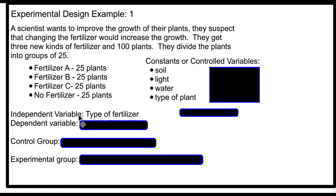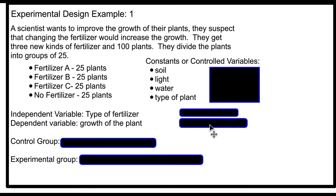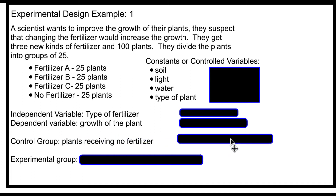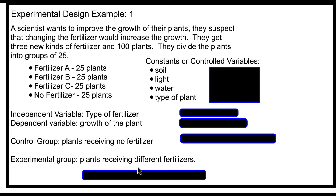The dependent variable is how the plants respond — typically the growth of the plant. It could be measured as how healthy it is, how much fruit it's producing, or lots of other ways. Another aspect of the experiment is the control group, which you need to compare against to know these fertilizers are better than not using fertilizer. So the control group is the plants receiving no fertilizer. That's called the control group.